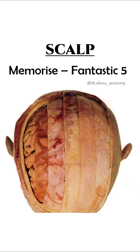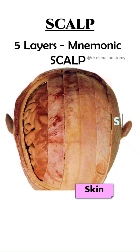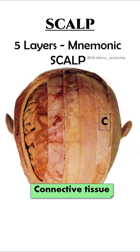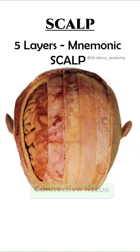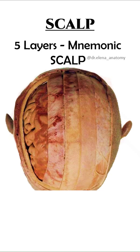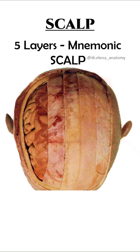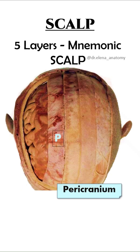Let's memorize scalp using the Fantastic Five. It has five layers. Memorize using the mnemonic SCALP: S for skin, C for connective tissue, A for aponeurosis which is galea aponeurotica, L for loose connective tissue considered as the dangerous area of scalp, and P for pericranium.